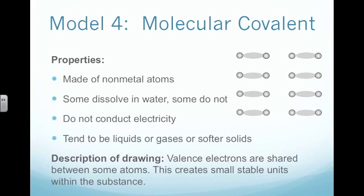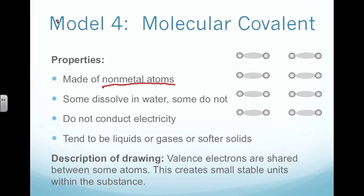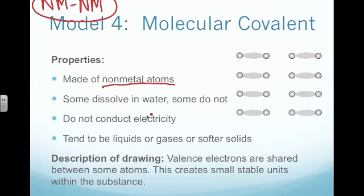The last one is called a molecular covalent bond. The molecular covalent bond is very much like the network covalent in that it's made up entirely of nonmetal atoms — you'll see a nonmetal attached to a nonmetal. These are a little bit different than the network covalent because some of them do dissolve in water, though others do not. They don't conduct electricity, but these tend to be liquids or gases, or even softer solids, whereas the network covalent was very, very hard solids.